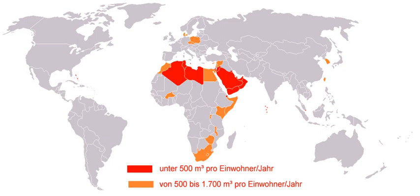Water can produce a natural disaster in the form of tsunamis, hurricanes, rogue waves and storm surge. Land-based floods can originate from bursting dams, rivers overflowing their banks or levee failure.